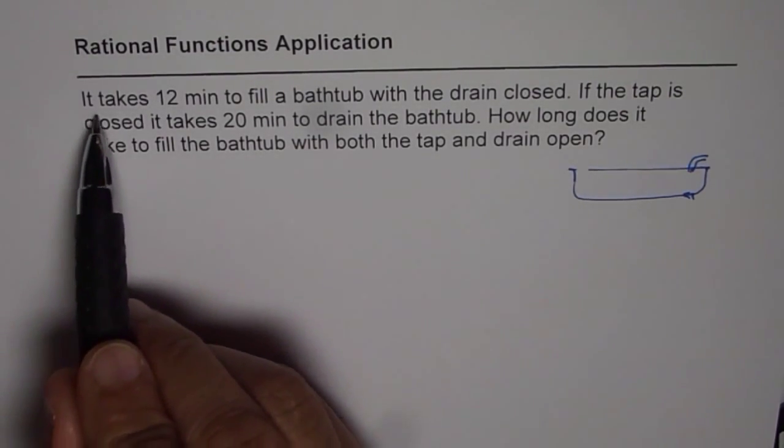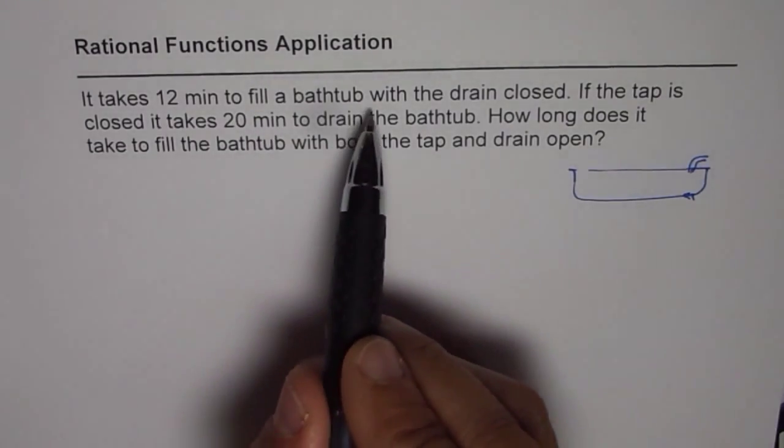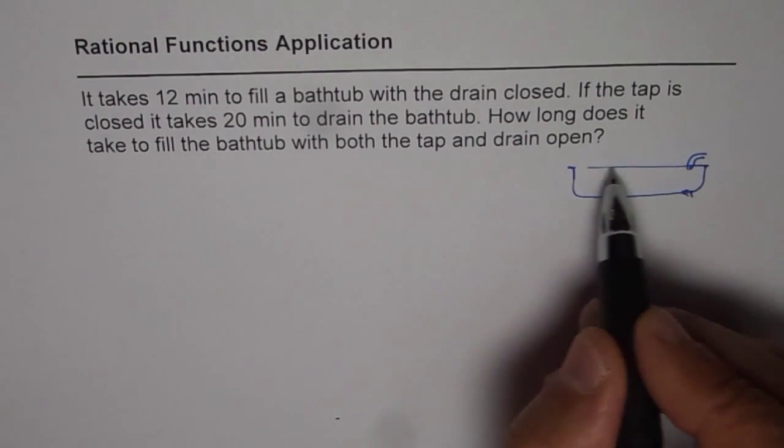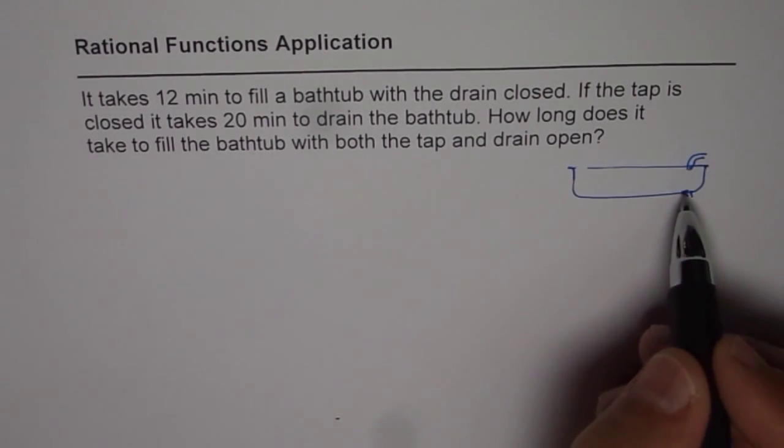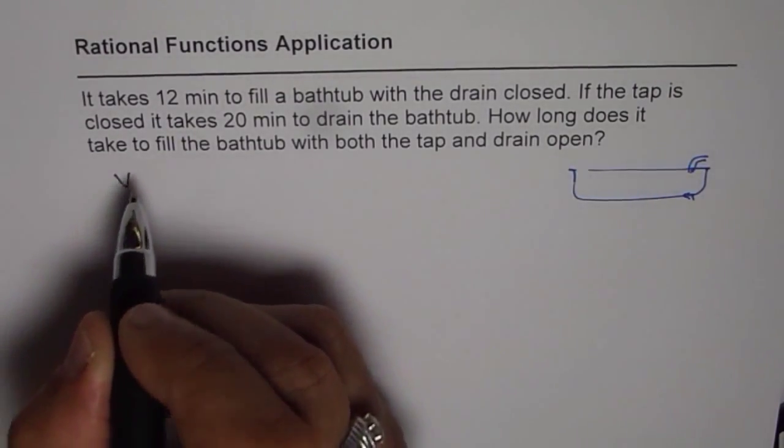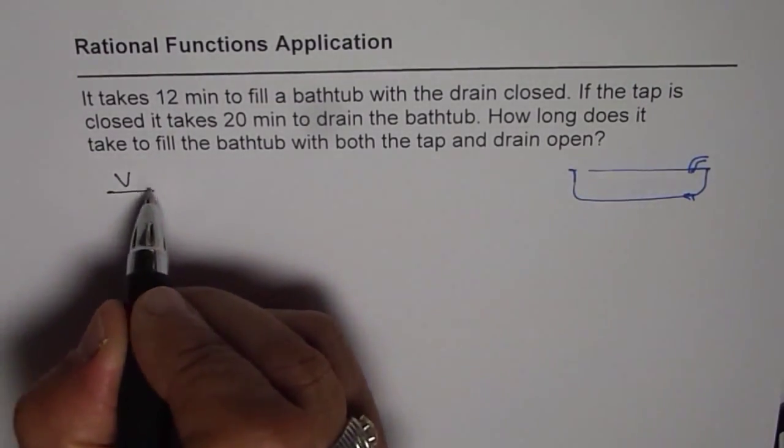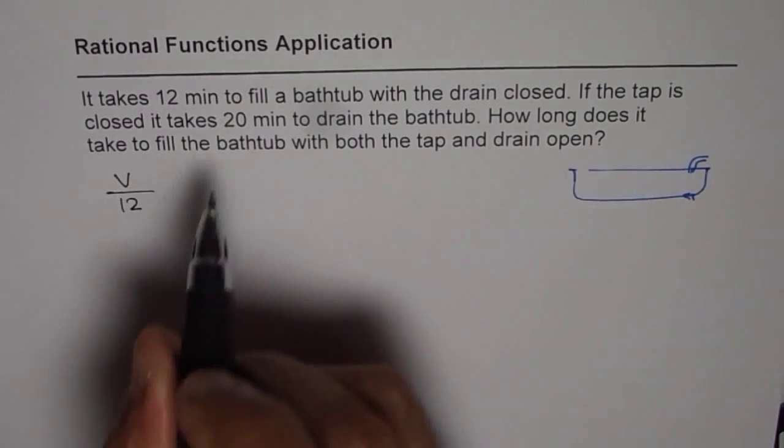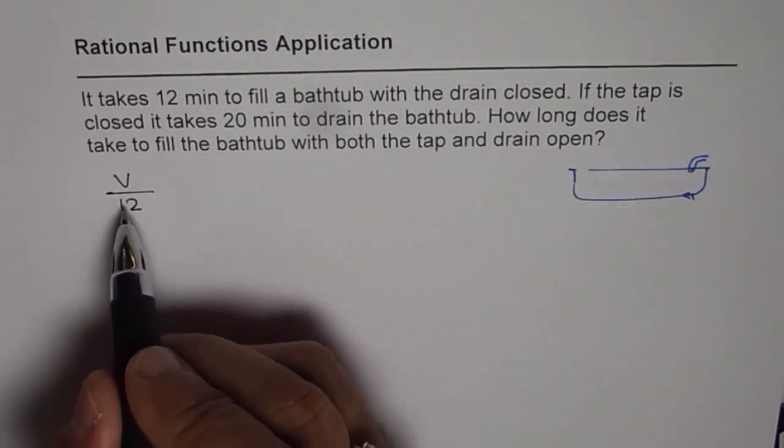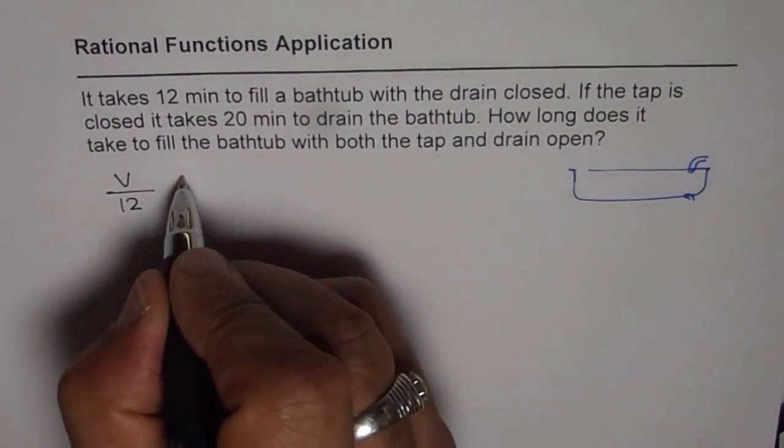Now let's see how to solve this type of question. When we say it takes 12 minutes to fill a bathtub with the drain closed, let us say this total volume in this bathtub is V units. So V is the volume and it takes 12 minutes to fill the bathtub, so the rate of filling is V over 12.